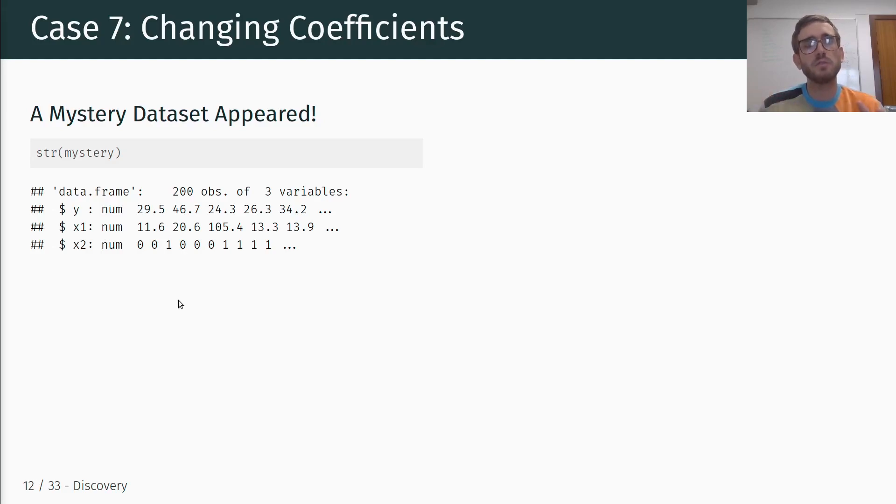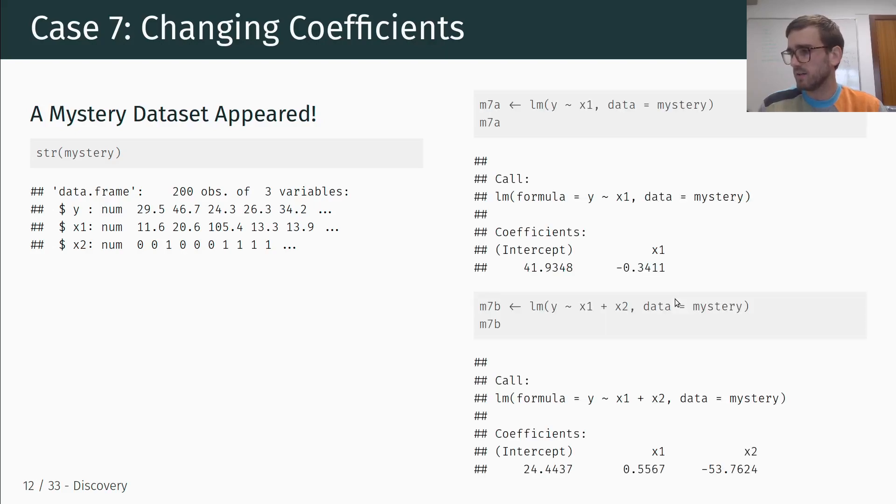So we can run two different models here, two different OLS regressions that yield slightly different results. Let's see, the first one, we just include our x1 variable, our continuous independent variable, and we see we have an intercept of 41.93, so that's the expected value of y conditional on x1 being equal to 0, and we have our slope coefficient of minus 0.34. So one unit increase in x1 is associated with a 0.34 decrease in the expected value of y. Again, we're not making a causal claim here, but this is just the statistical association. So an increase in x is associated with an expected decrease in y by 0.34.